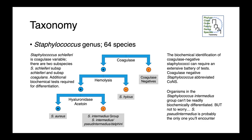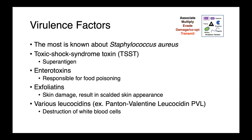Staphylococcus schleiferi is coagulase variable — some isolates are coagulase positive, some are coagulase negative — and these are also encountered particularly in companion animal practice. When it comes to virulence factors, we know by far the most about Staph aureus as compared to other species, as it is a very important human pathogen and so is well studied.